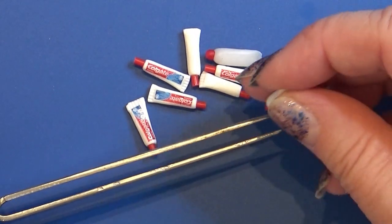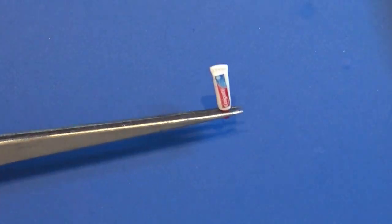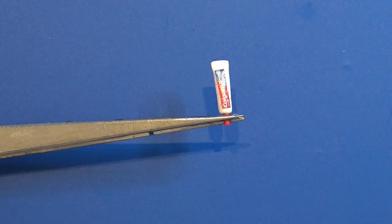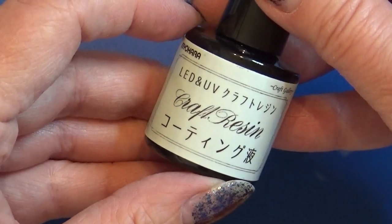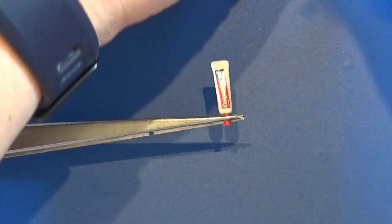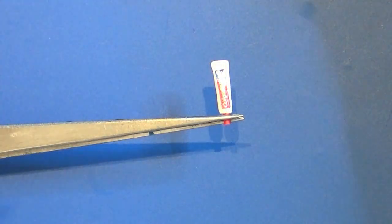I use my tweezers to hold the lid of the little tube, and then I'm going to take my UV gel - this is actually a UV resin gel that I'm going to use.